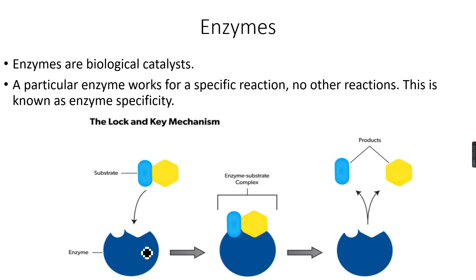Enzymes are biological catalysts, meaning they are present in living things. Enzymes are made of proteins. For example, we have several enzymes in our body like amylase. Amylase breaks down starch into sugar molecules. So catalysts in our body, which are enzymes, carry out several functions such as that of amylase.